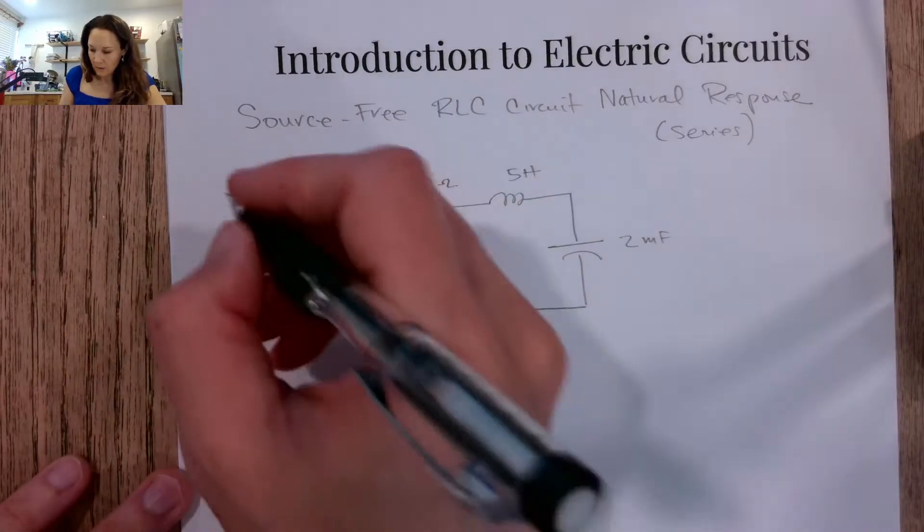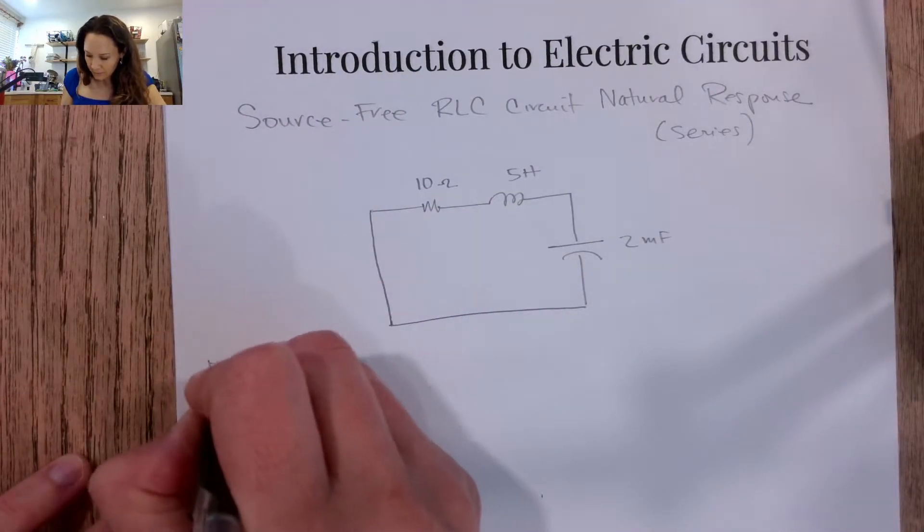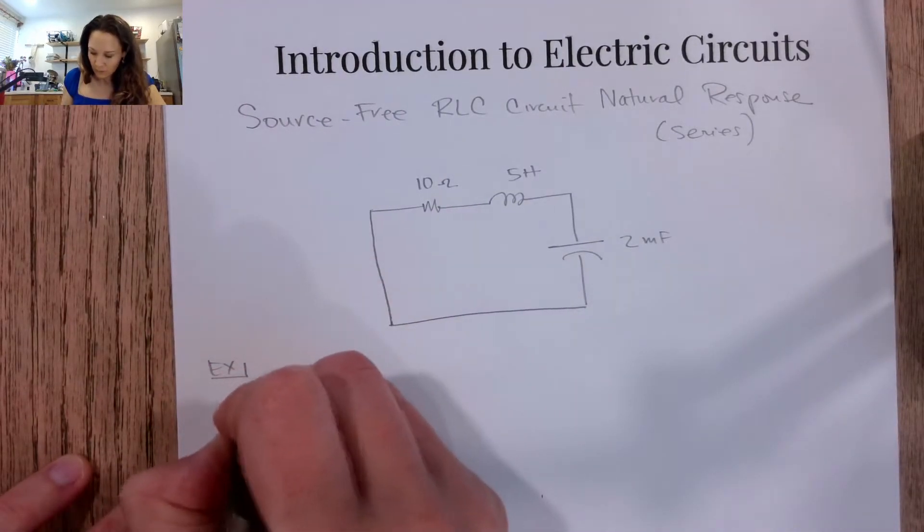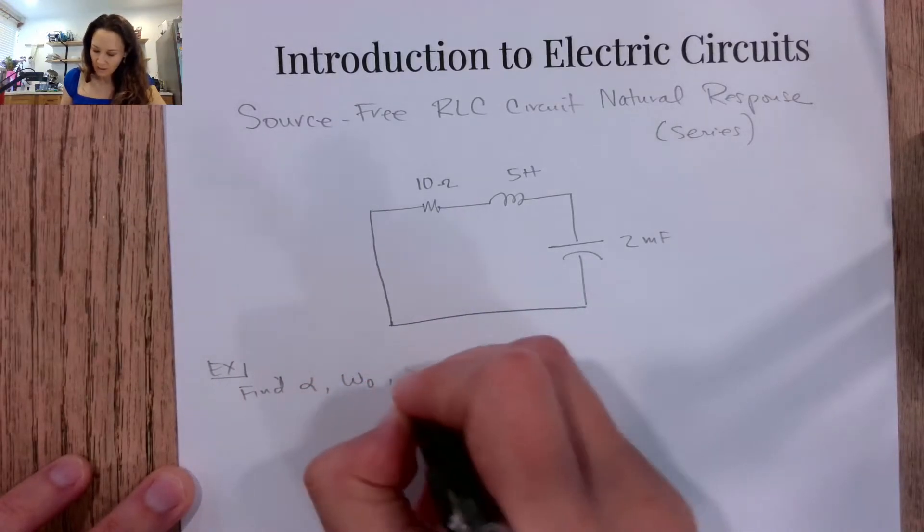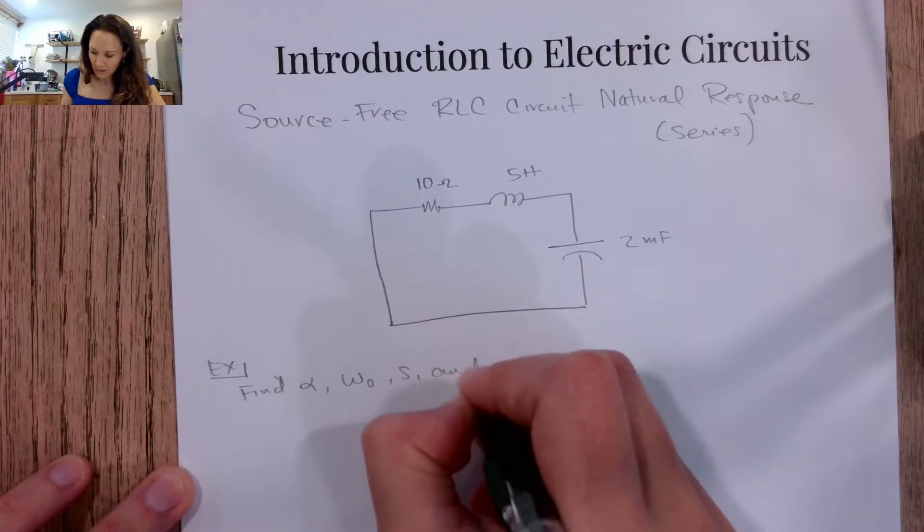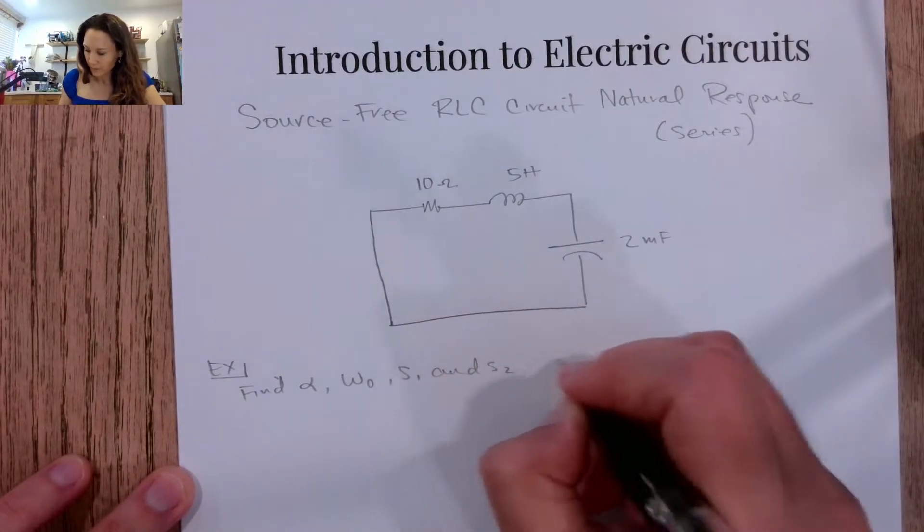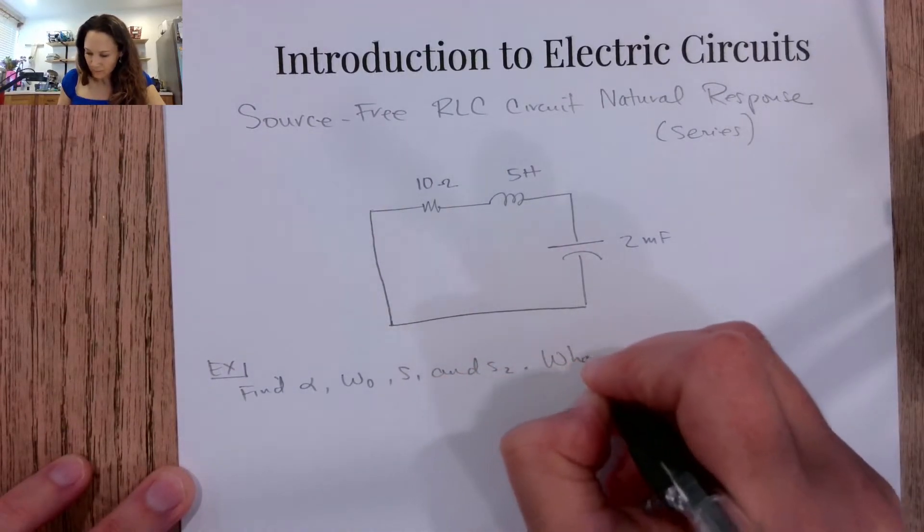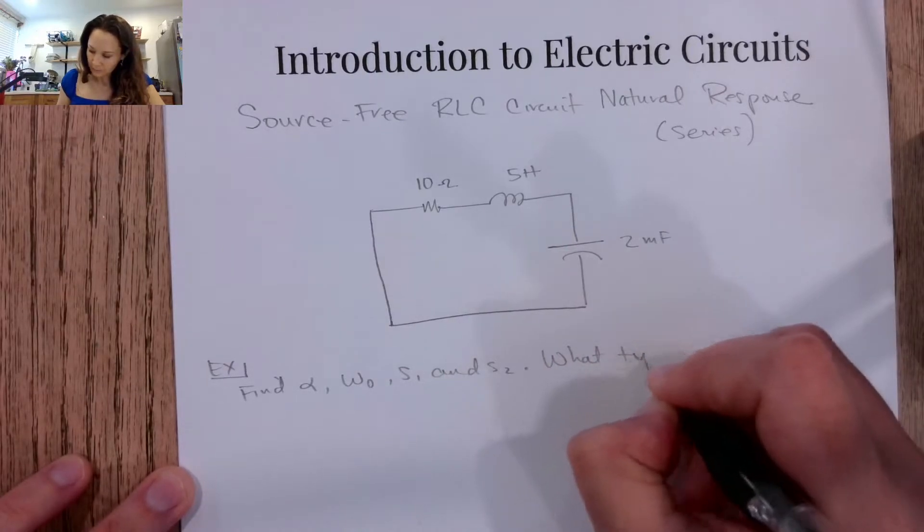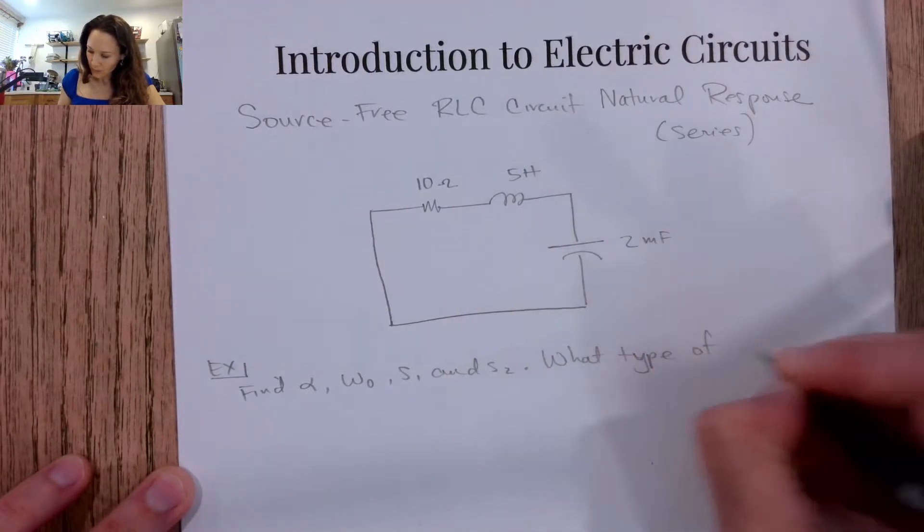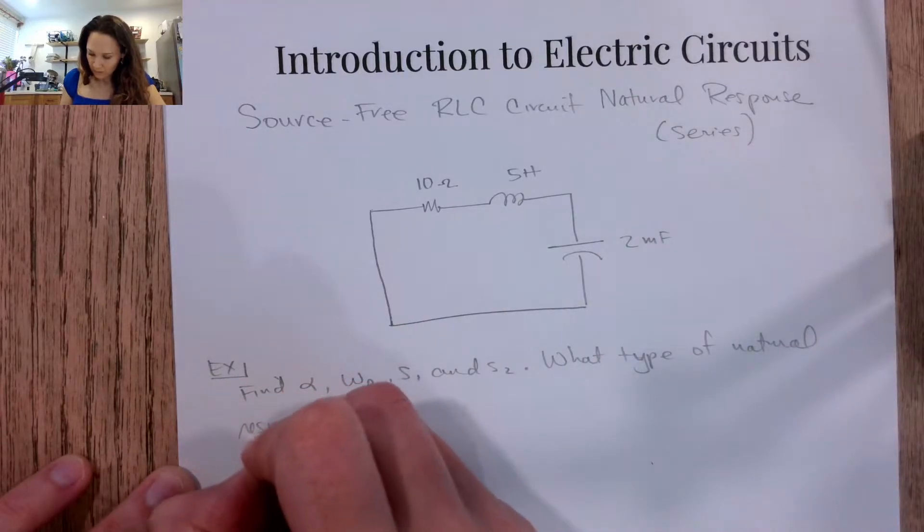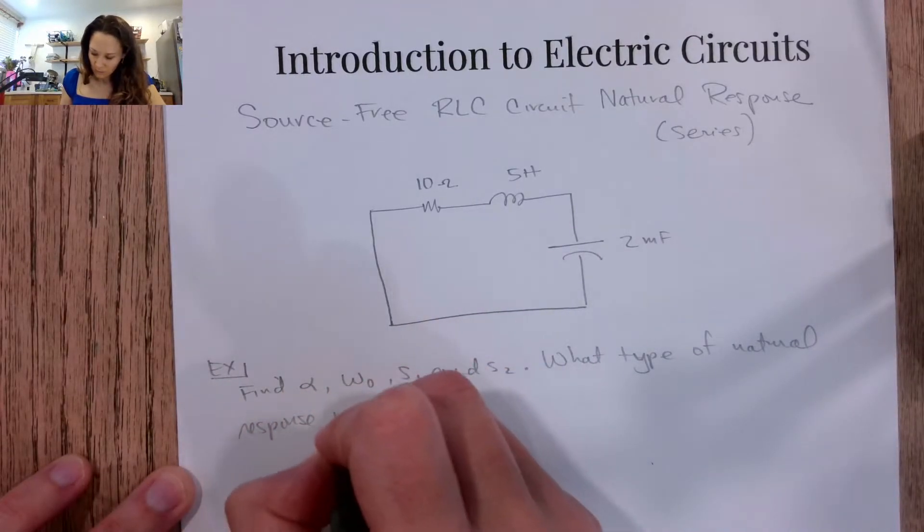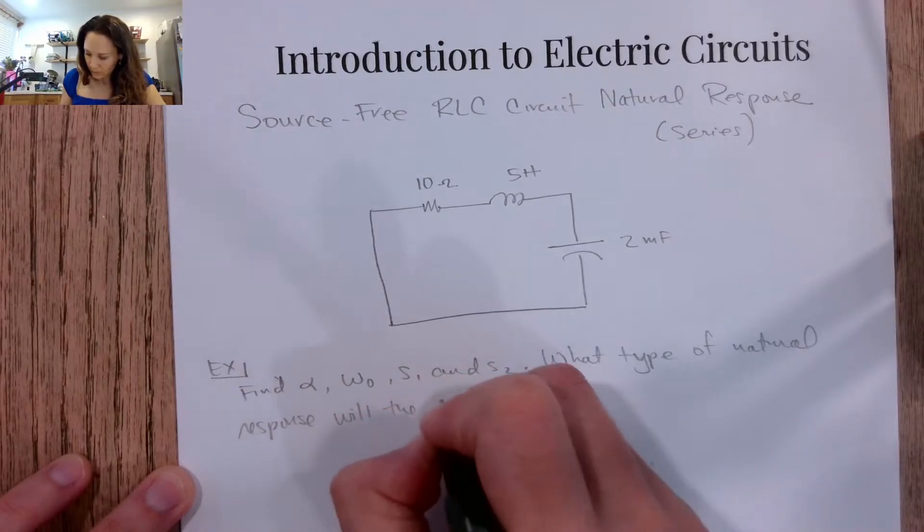And let's say we are asked, here's the example, to find alpha, omega-0, S1, and S2, and we're asked what type of natural response will the circuit have.